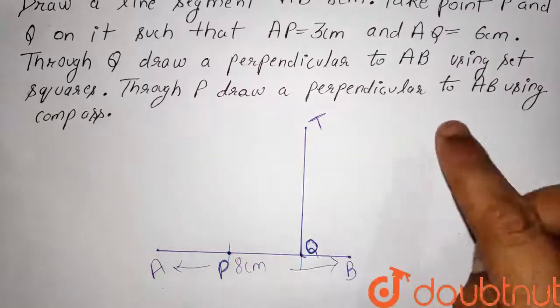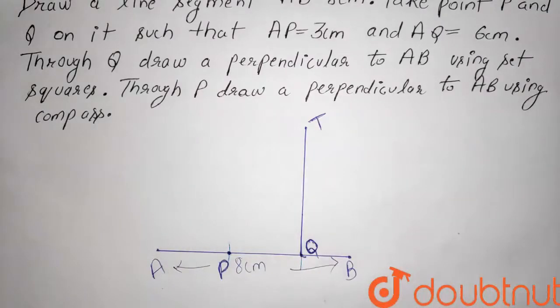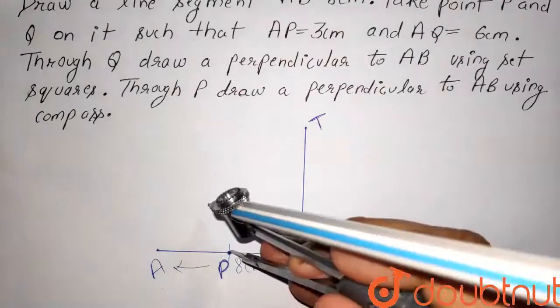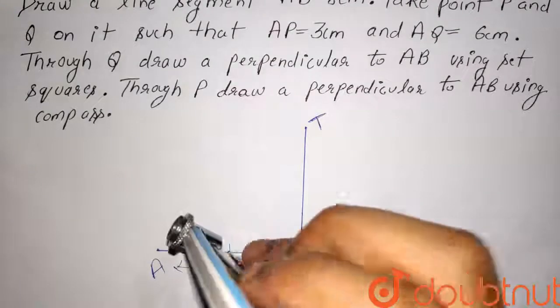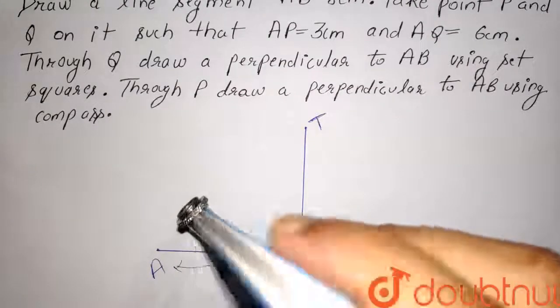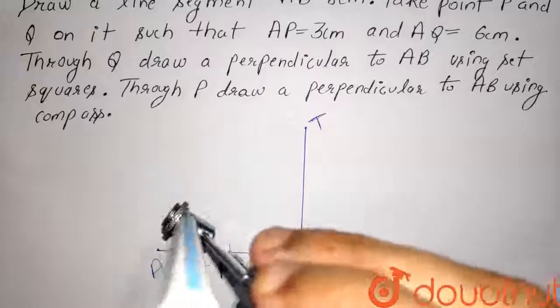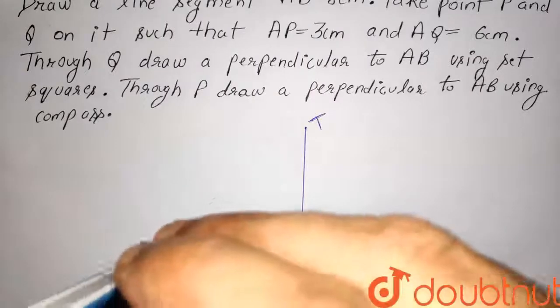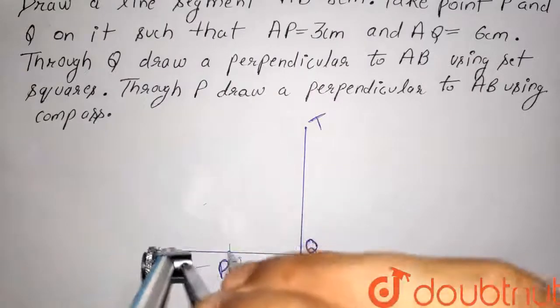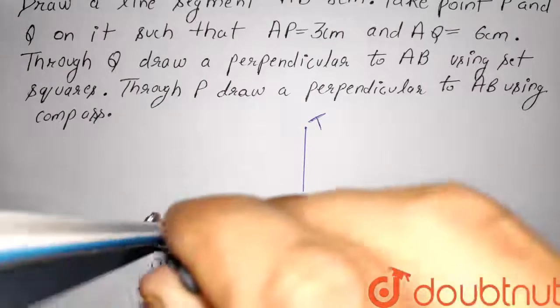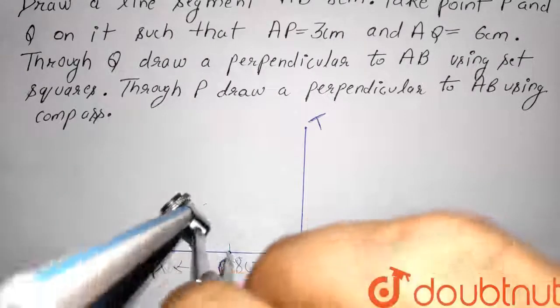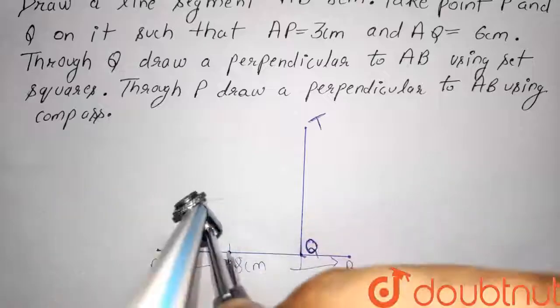Now, through P, we have to draw a perpendicular to AB using a compass. So, taking center at P and the measurement of the compass as random, we will draw a semicircle.